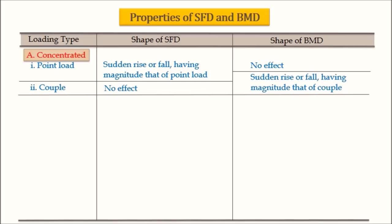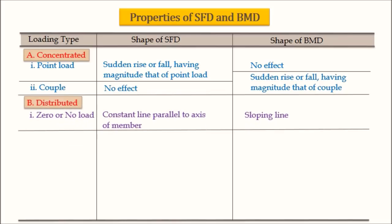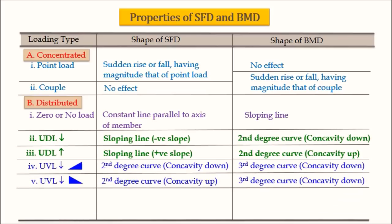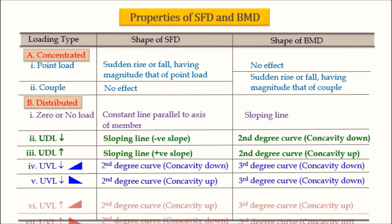For concentrated loads, there are two effects: point load and couple. For a point load, there is a sudden rise or fall in SFD but no effect in BMD. When a couple is acting, there is no effect on SFD but a sudden rise or fall in BMD. For distributed load, when there is no load on a segment, SFD is a constant line and BMD is an inclined sloping line. For UDL and UVL, we have discussed everything regarding the shape of SFD and BMD.